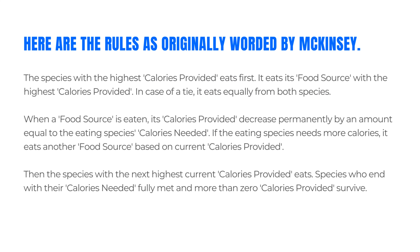Let's deal with the eating rules. Here are the rules as originally worded by McKinsey: The species with the highest calories provided eats first. It eats its food source with the highest calories provided. In case of a tie, it eats equally from both species. When a food source is eaten, its calories provided decrease permanently by an amount equal to the eating species' calories needed. If the eating species needs more calories, it eats another food source based on current calories provided. Then the species with the next highest current calories provided eats. Species who end with their calories needed fully met and more than zero calories provided survive.